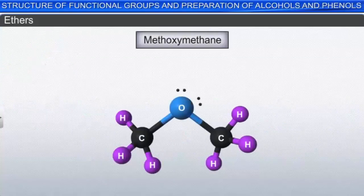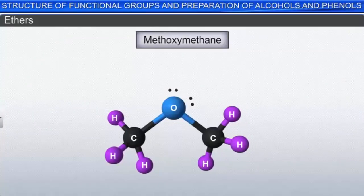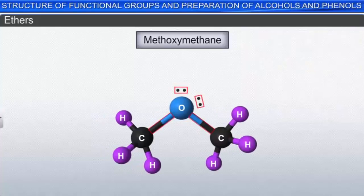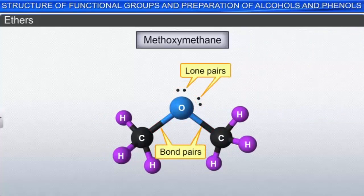Methoxymethane is a typical ether with a bridging oxygen group. The four electron pairs around the oxygen — two bond pairs and two lone pairs — have an approximately tetrahedral arrangement.